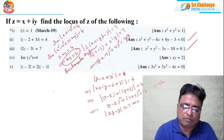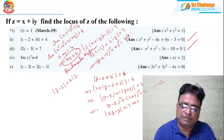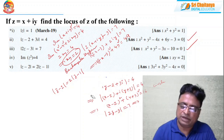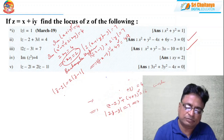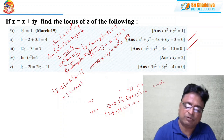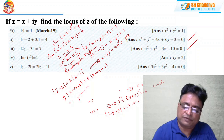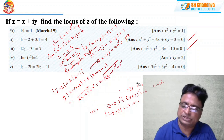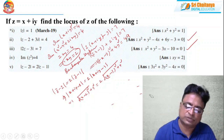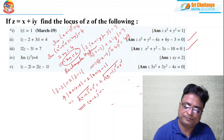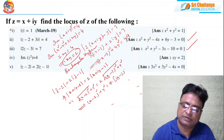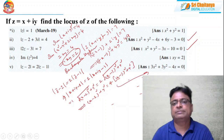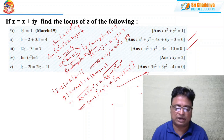The last locus problem: |z − 2| = 2|z − 1|. So |x + iy − 2| = 2|x + iy − 1|, which gives √((x−2)² + y²) = 2·√((x−1)² + y²). After squaring both sides: (x−2)² + y² = 4[(x−1)² + y²]. After simplification you get the final locus equation. These are elementary cases that one can solve easily.